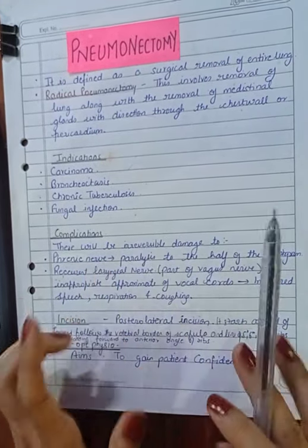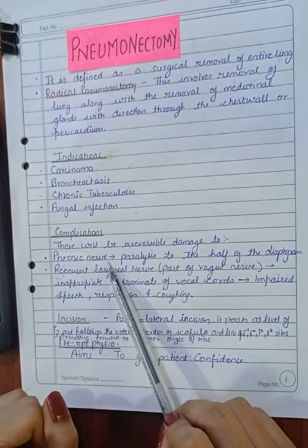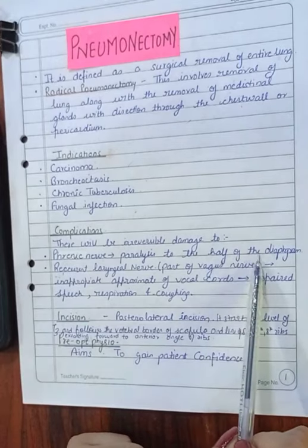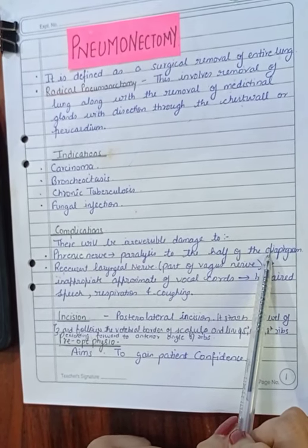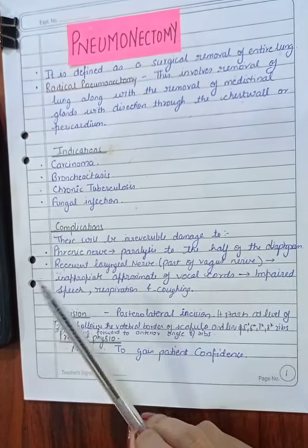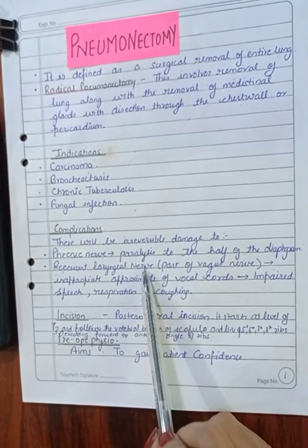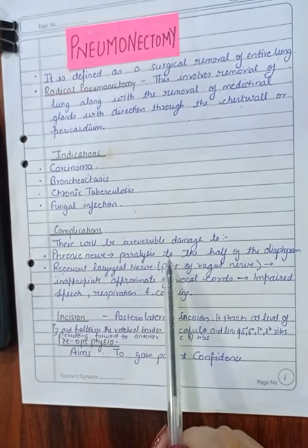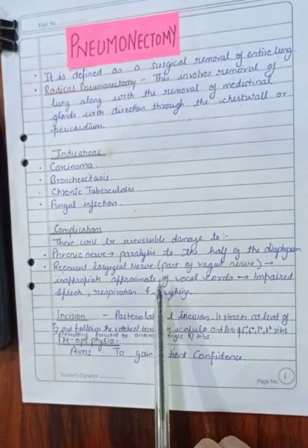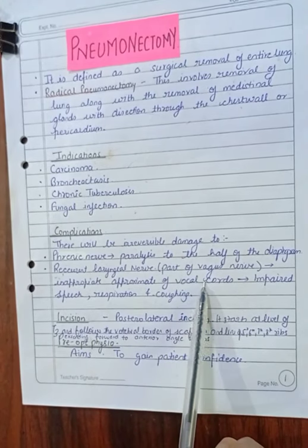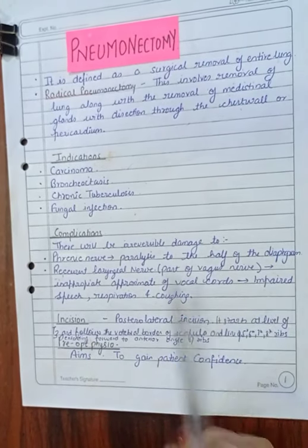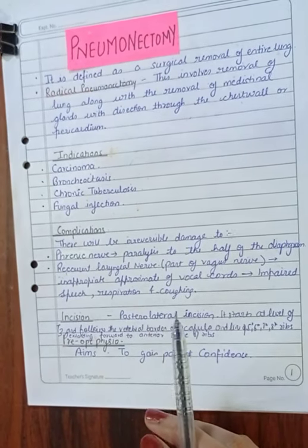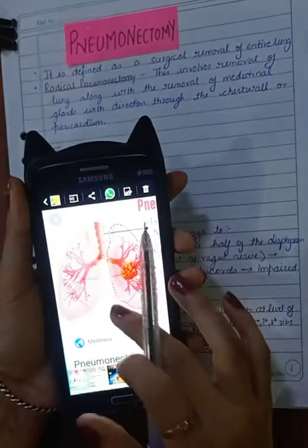The complications associated with this procedure: first is damage to the phrenic nerve — when the phrenic nerve gets damaged it leads to paralysis of half of the diaphragm, therefore affecting respiration. The second is the recurrent laryngeal nerve, which is part of the vagus nerve; when affected it leads to inappropriate approximation of the vocal cords, impairing speech, respiration, and coughing.